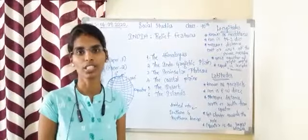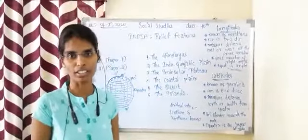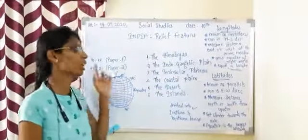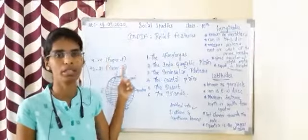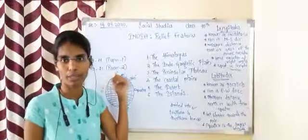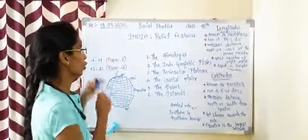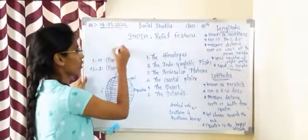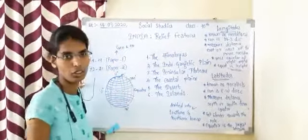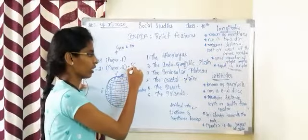Hello everyone. In today's video we shall learn about social studies of 10th standard. We have 21 units in total, where lessons 1 to 11 will be in paper 1 and 12 to 21 will be in paper 2. Paper 1 will be normally based on geography and also a little bit of economics. Paper 2 is based on civics and also history.